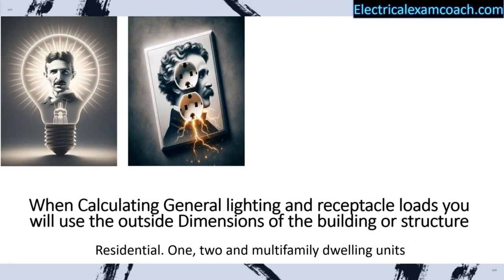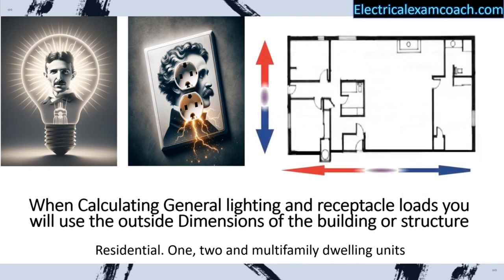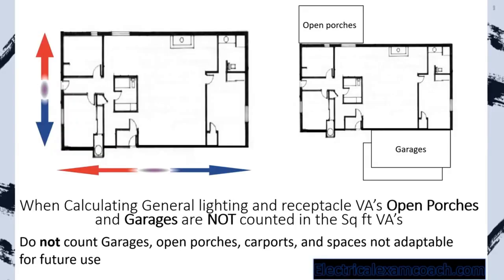When calculating our general lighting and receptacle loads, we will use the outside dimensions of the building or structure — we measure from the outside in both directions. Open porches and garages are not counted in our general square foot VAs. We do not count garages, open porches, carports, and spaces that are not adaptable for future use.